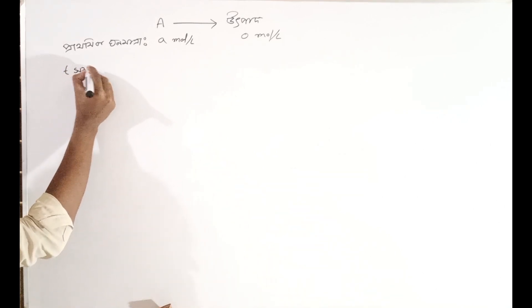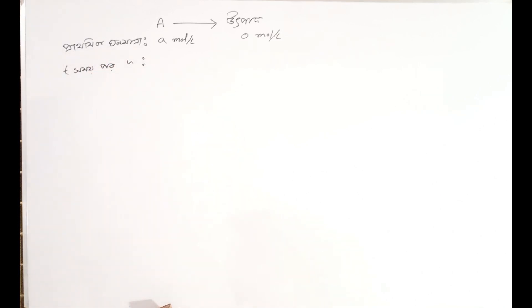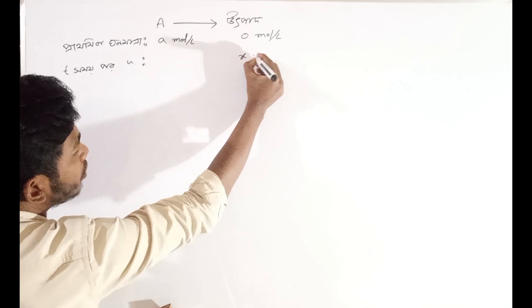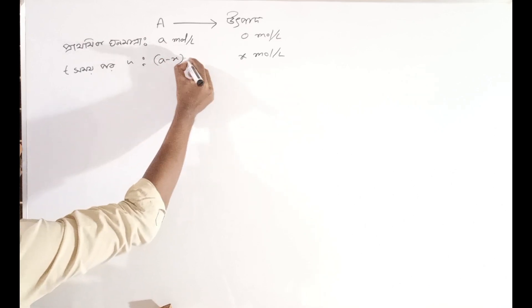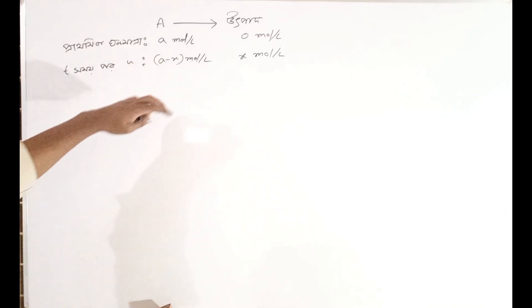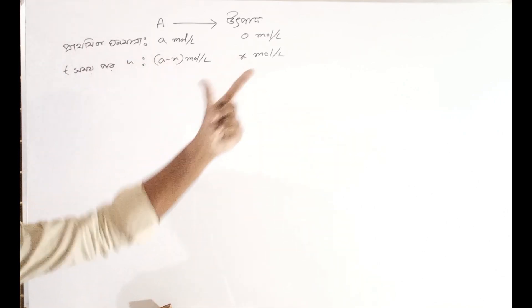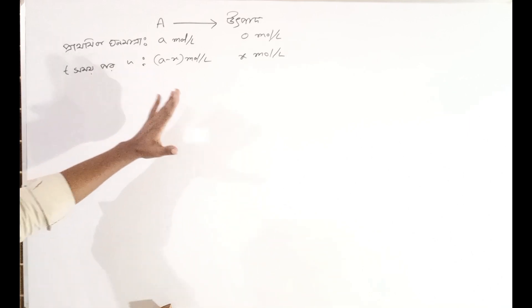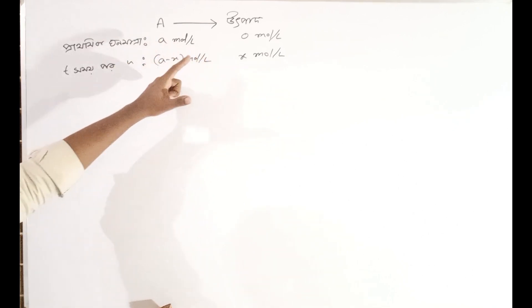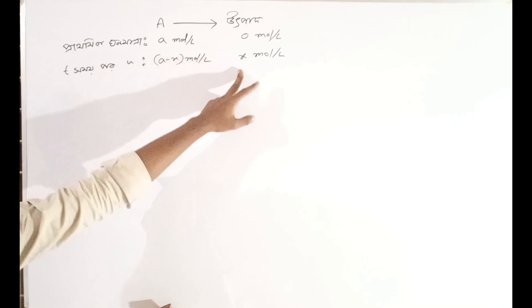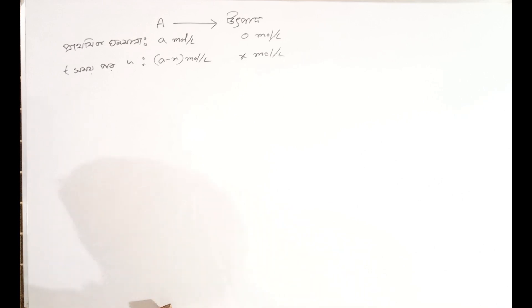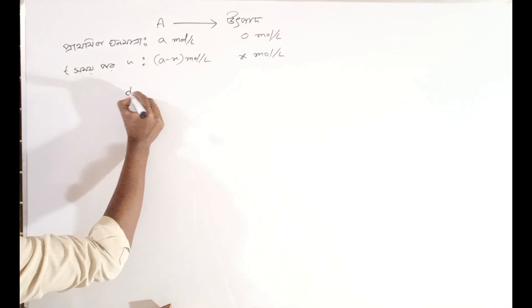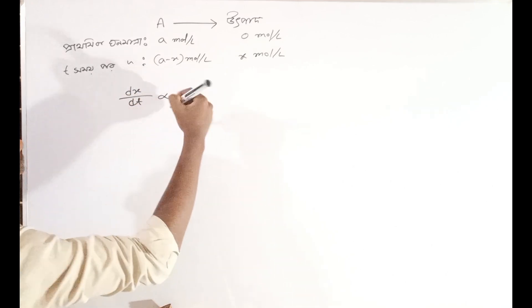For a first-order reaction, the primary stability — concentration decreases. Here, a minus x mol per liter. For a first-order reaction, the formula is: dx/dt is proportional to concentration — that is, shamanupati comes in.